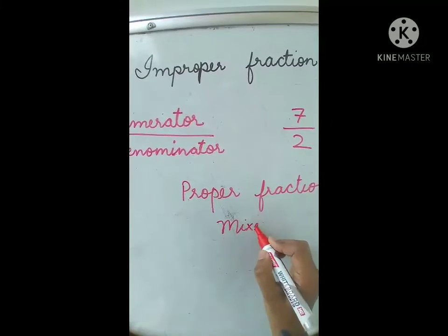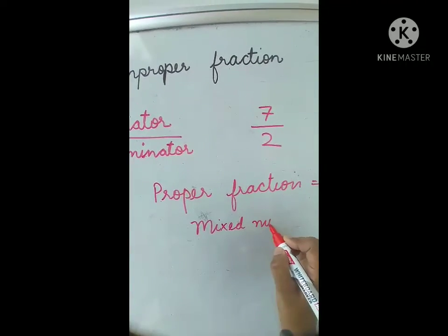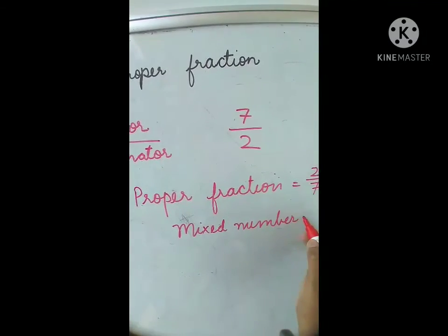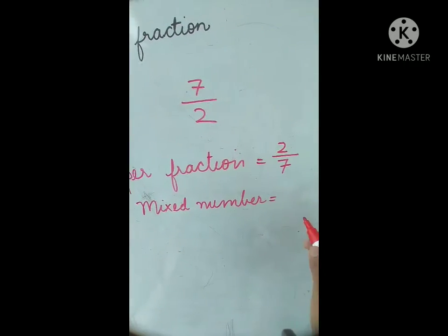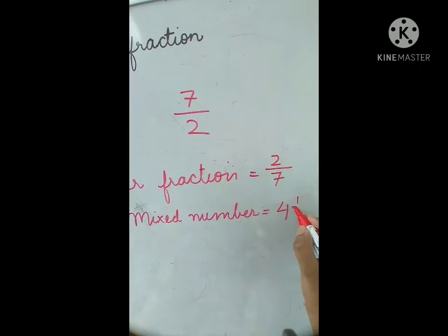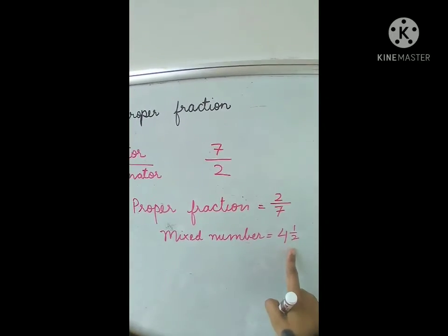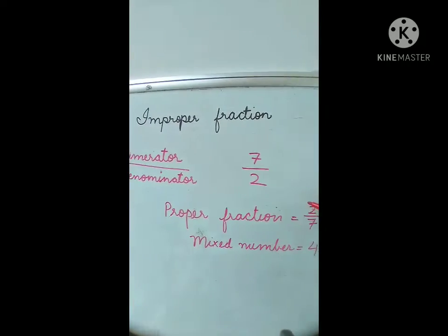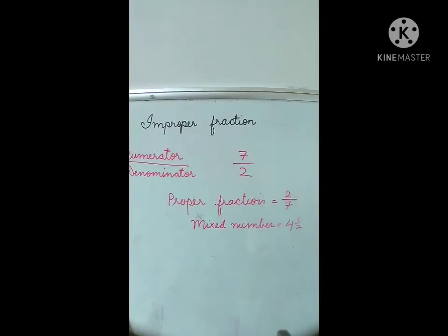And can you tell me what is a mixed number? A mixed number has a whole number, for example, 4, and a proper fraction. So this is a mixed number, this is proper fraction, and this is improper fraction.